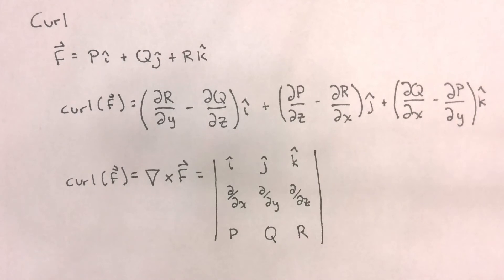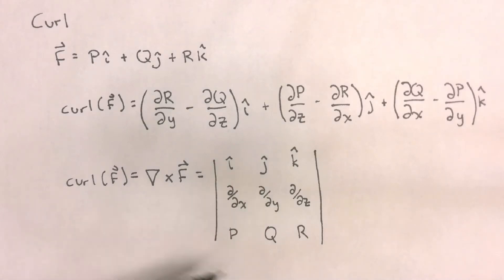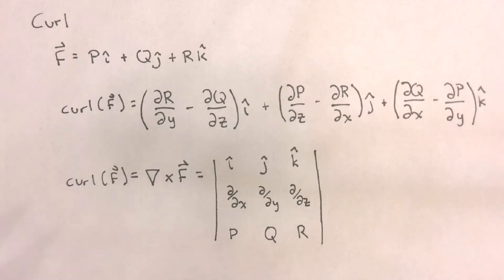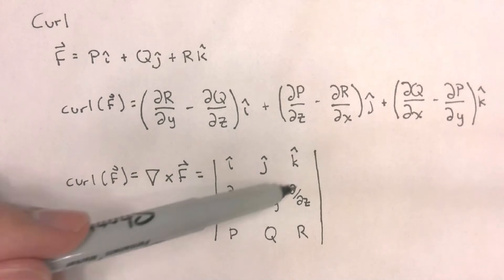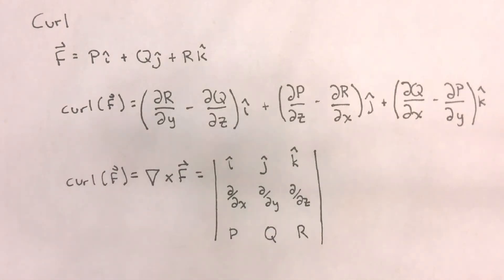Again, let's keep in mind that del is not a vector, it is an operator. However, if we treat it as a vector and we take the determinant of the matrix formed by the cross product of del and f, you'll notice that the determinant will actually result in these three terms. So, we can define the curl of a function f as simply del cross that function f.